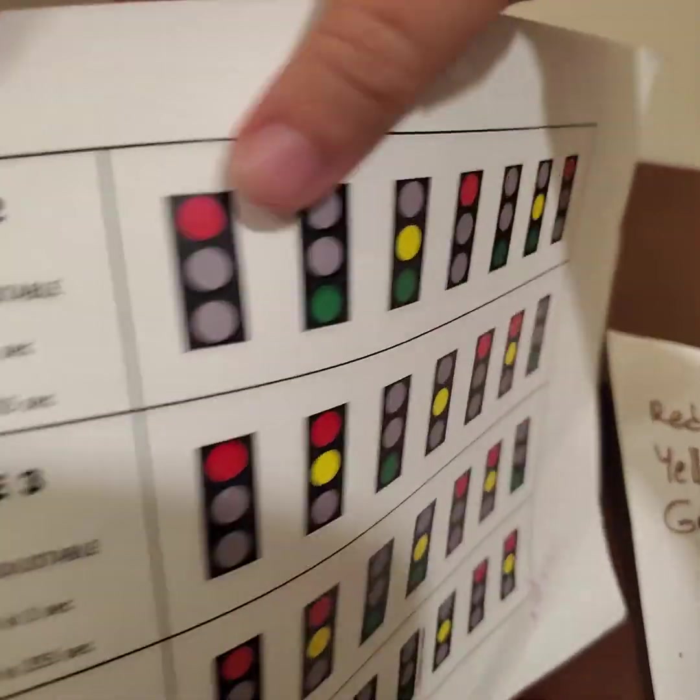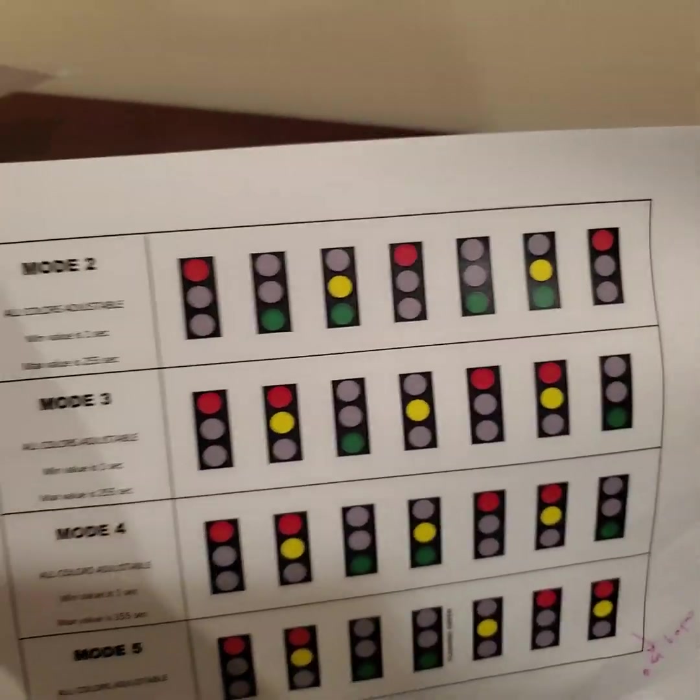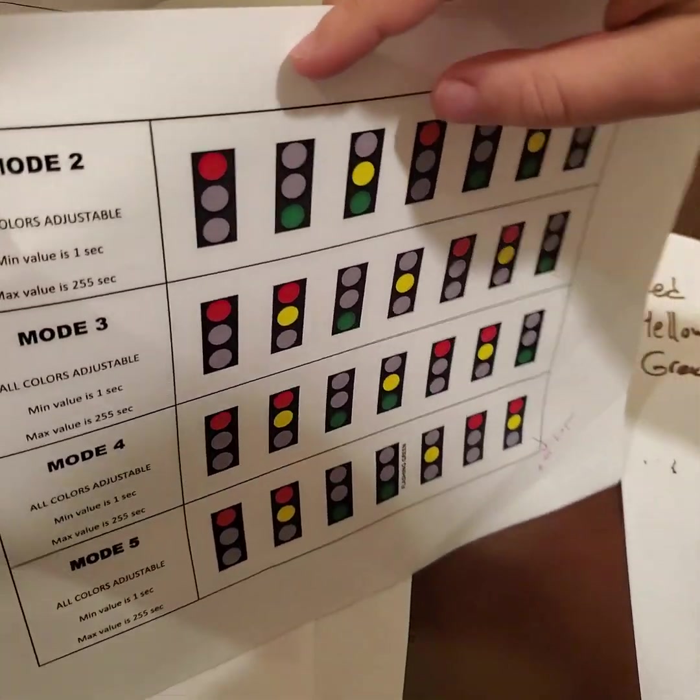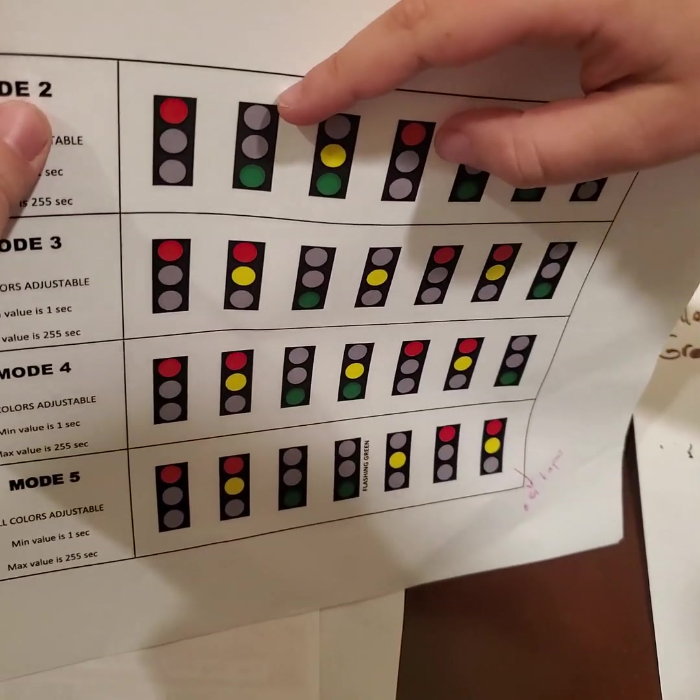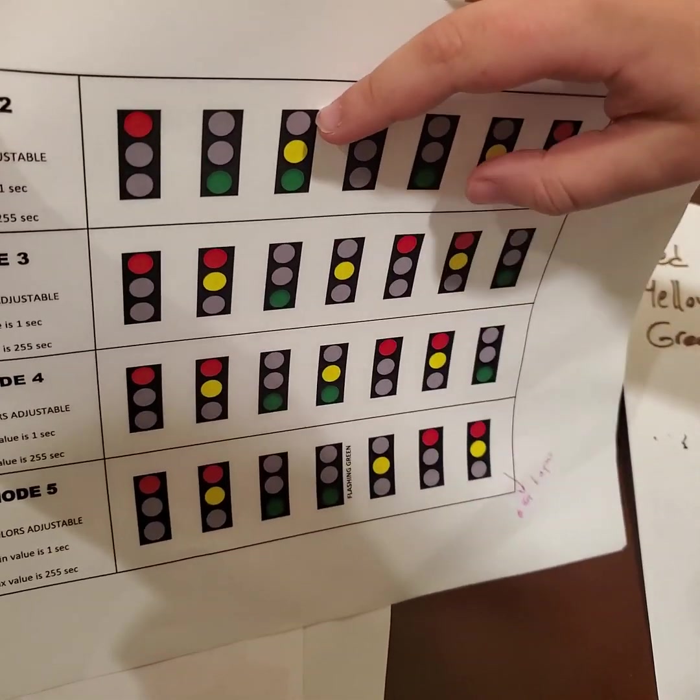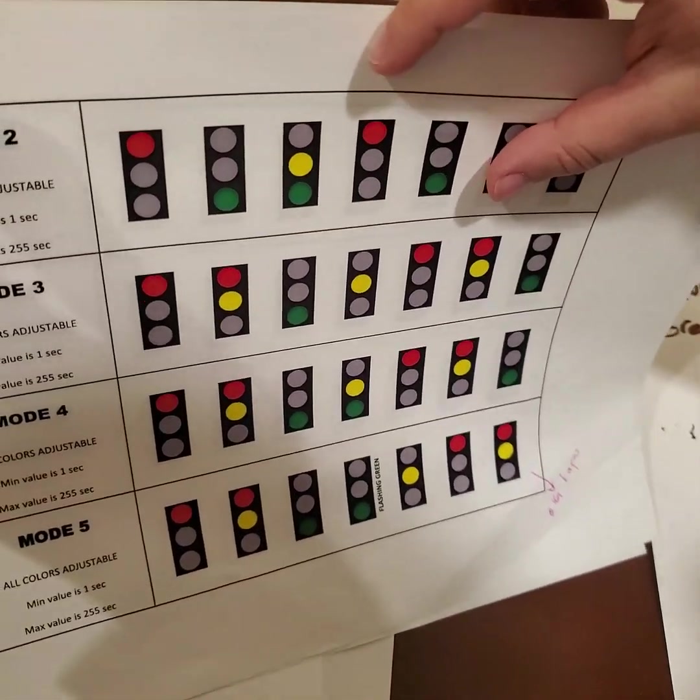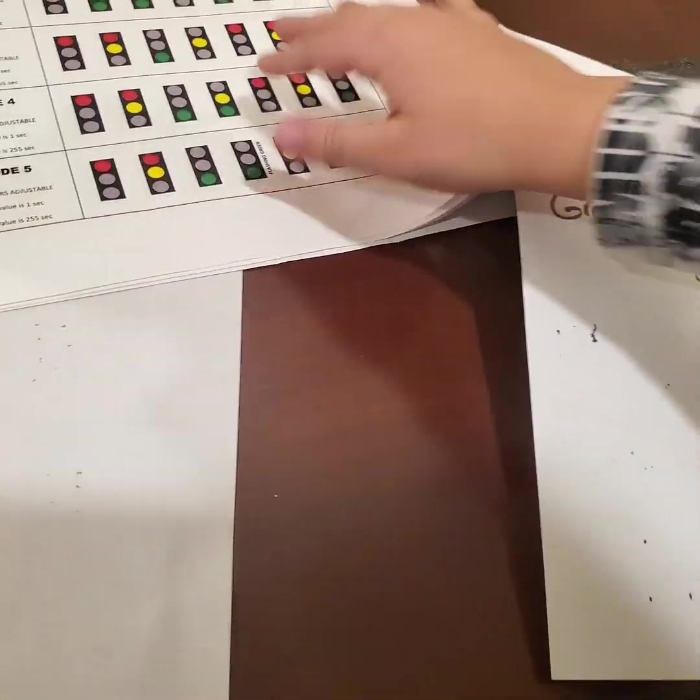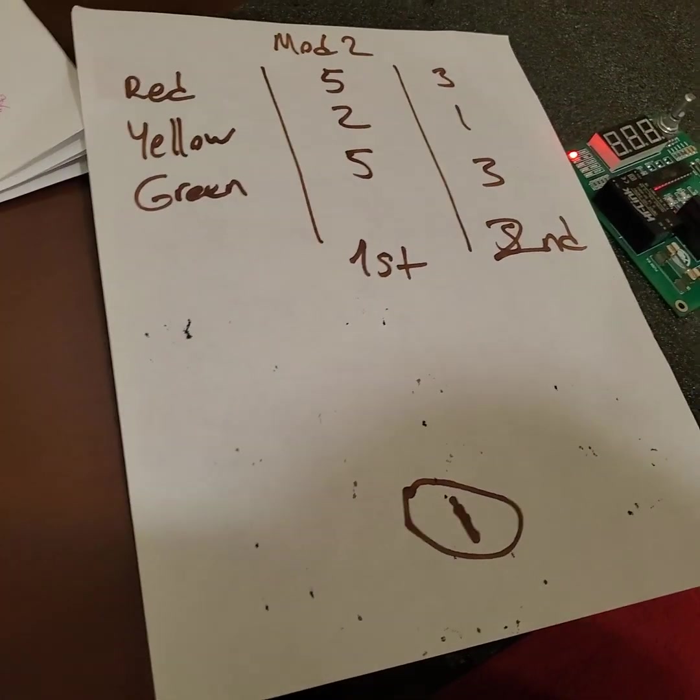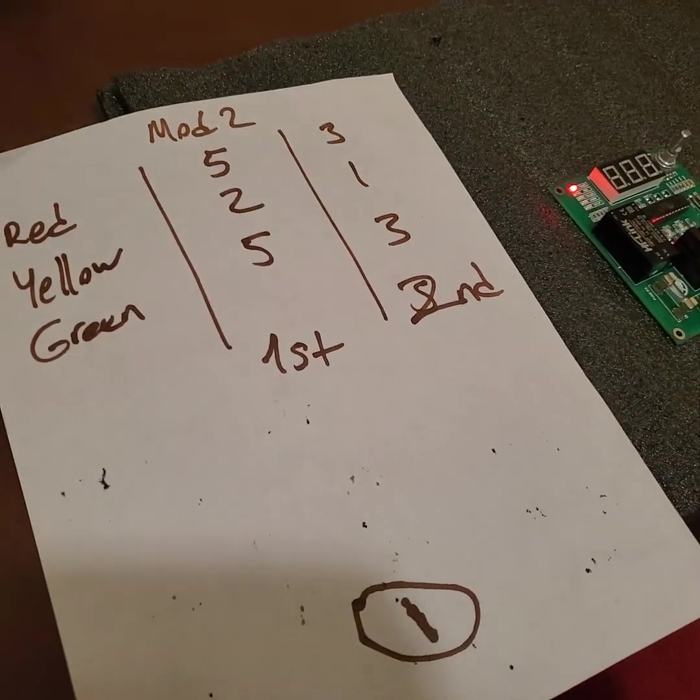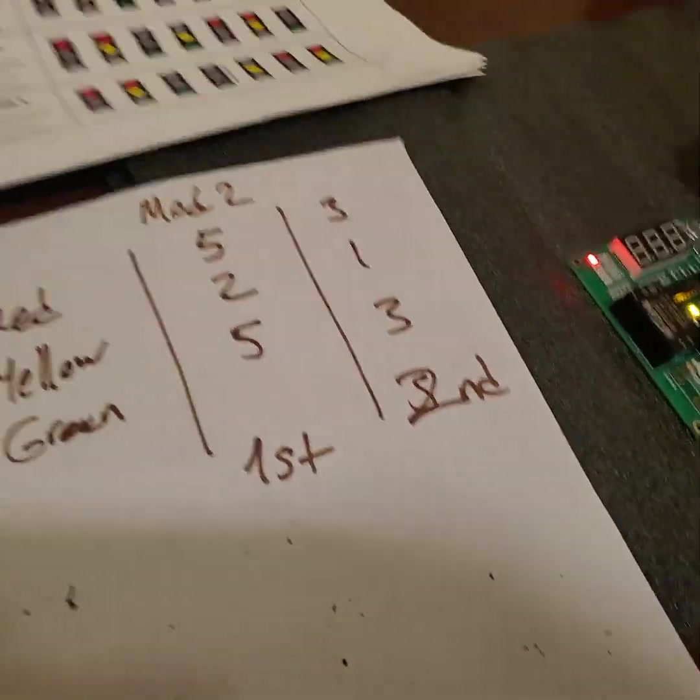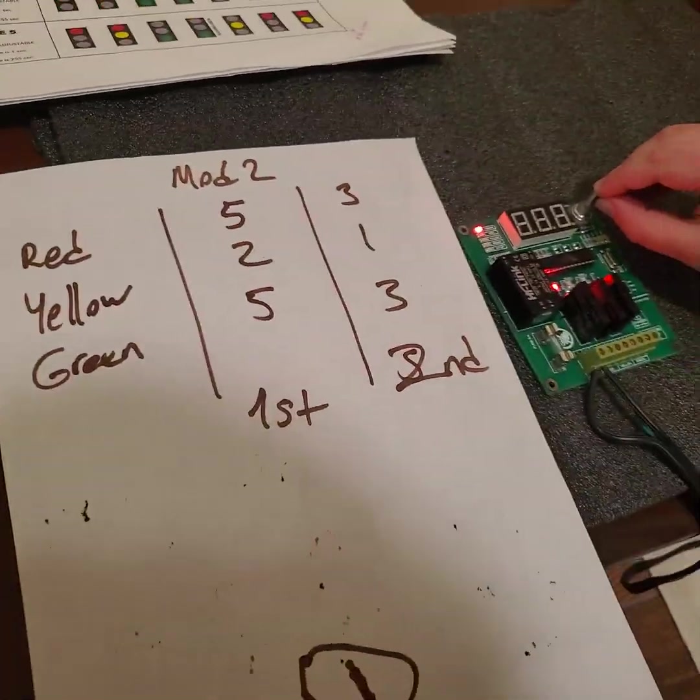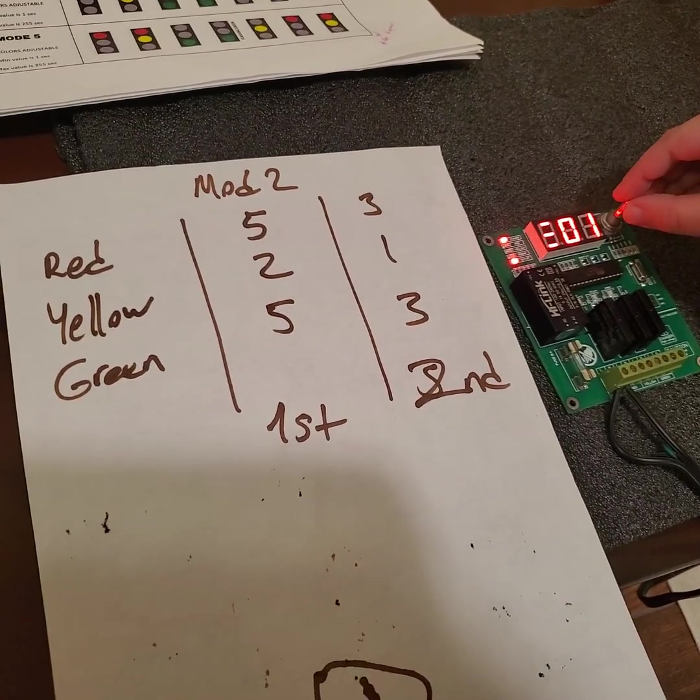Mode 2 is like the American traffic light. It works green, then red, then green and yellow at the same time, then red, and loops around. If you want to do that, you press the button here.